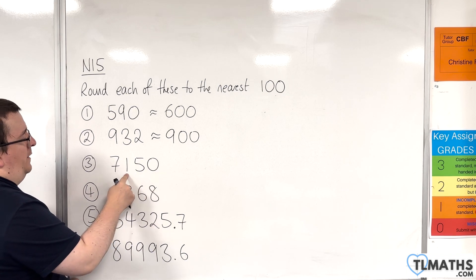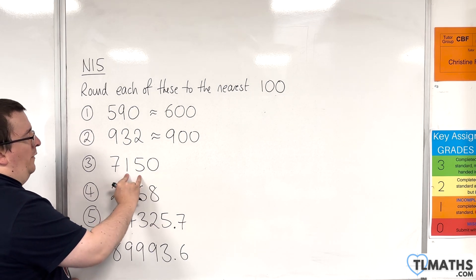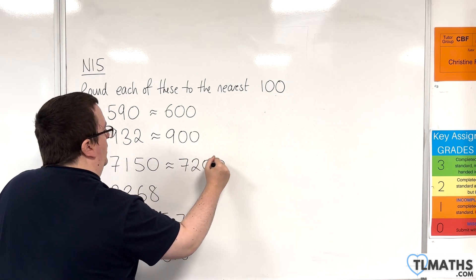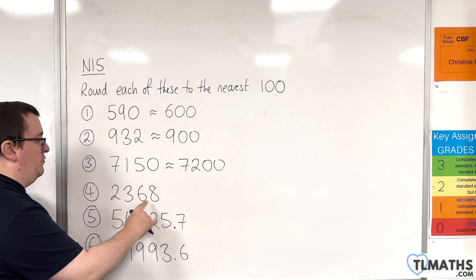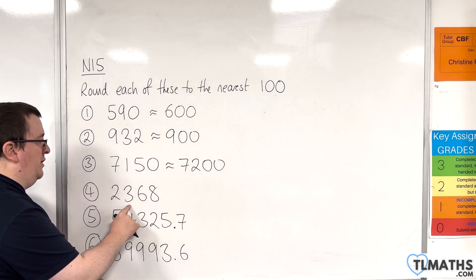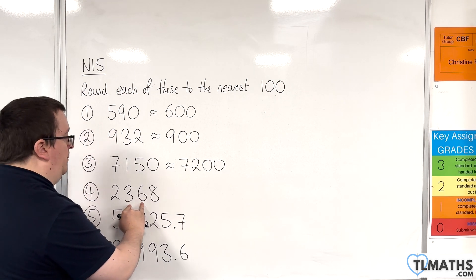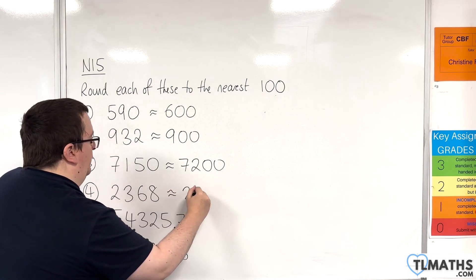7,150, find the hundreds column, one to the right, it's 5 or more, so you round this up to 7,200. 2,368, find the hundreds column, one to the right is 5 or more, so you round this up, so that would be 2,400.